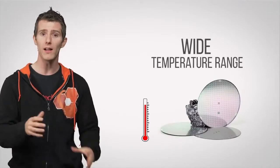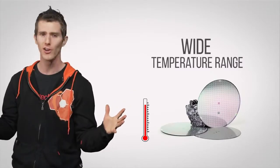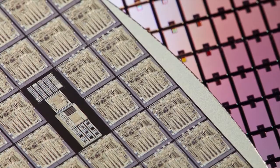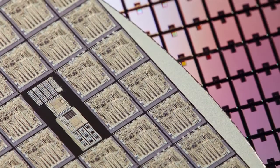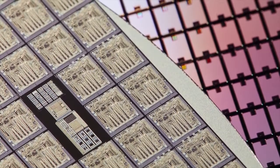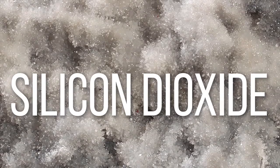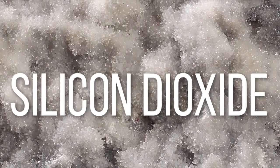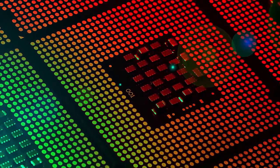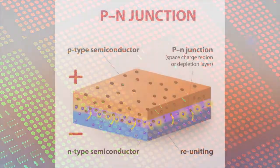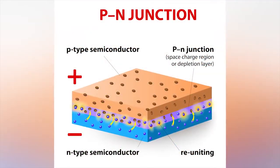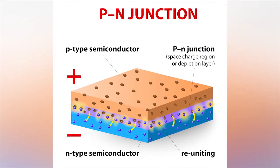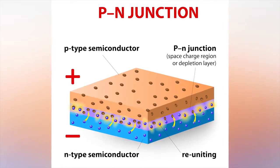Silicon also has other benefits, such as being able to operate well at a wide temperature range. And it can be easily doped with other chemicals that are necessary for microprocessors to work. For example, it's quite easy to form an insulating layer of silicon dioxide just by sticking silicon into a hot furnace. The tiny transistors in a CPU need insulated areas to further control and direct the flow of electricity with precision, so silicon's versatility makes it a natural choice.